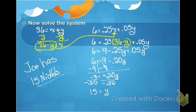As you can see, I rewrote one equation. I solved for a variable. And in this case, I solved for quarters. And I plugged it into my other equation and solved for nickels. And Joe has 15 nickels in his pocket. So that is one of the types of equations that you will have to solve.